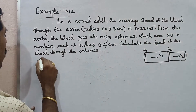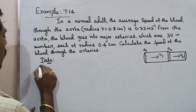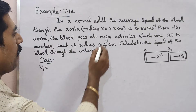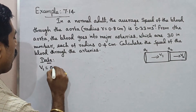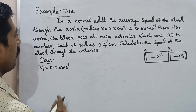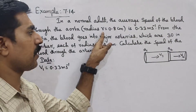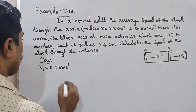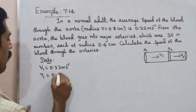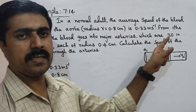Let's look at the data. Average speed, that is V1. V1 is equal to 0.33 m/s. That is the aorta speed. The aorta radius R1 is equal to 0.8 cm.